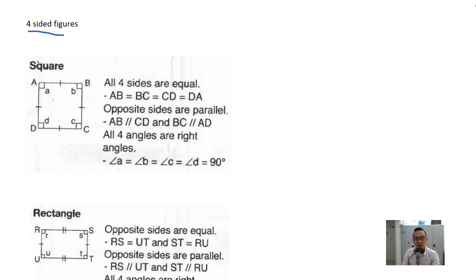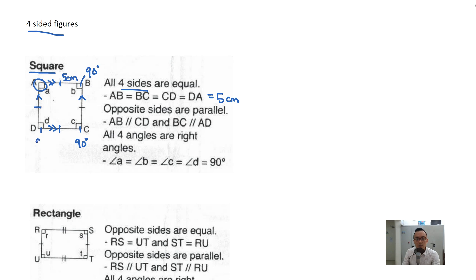Now let's look at four-sided figures. The most basic one is a square. All four sides are equal — AB equals BC equals CD equals AD. So if one side is 5 cm, then everything is 5 cm. Opposite sides are parallel, meaning the lines will never meet. All four angles are right angles, each equal to 90 degrees.